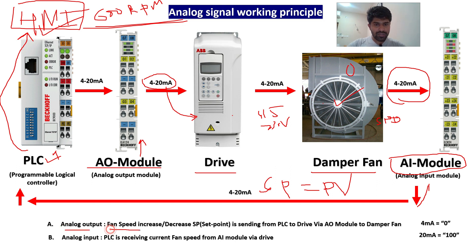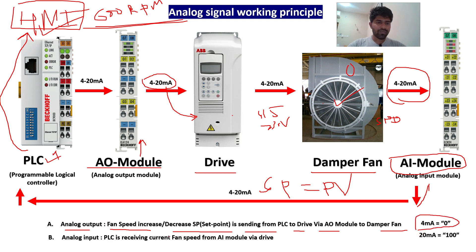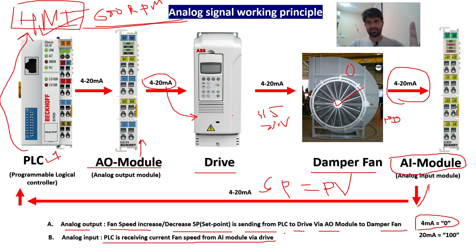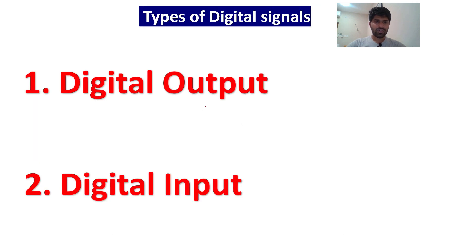Analog output: fan speed increase or decrease — the set point is sent from PLC to drive via the AO module to the damper fan. This is the 4 to 20 milliamps signal. Analog input: the PLC receives the current fan speed from the AI module via the drive. That is as simple as it is.